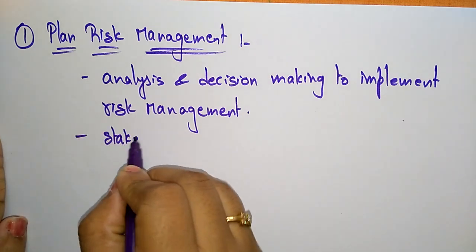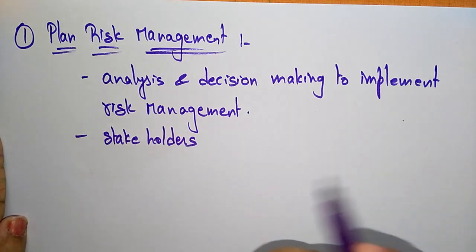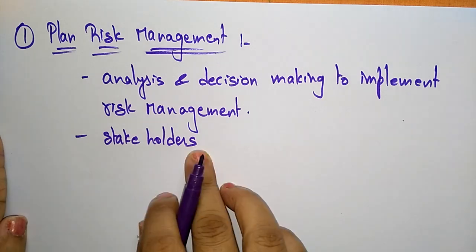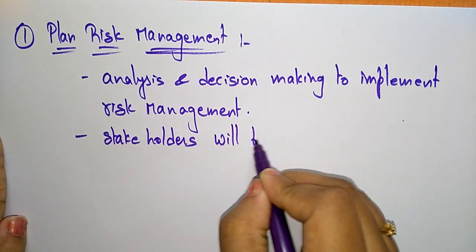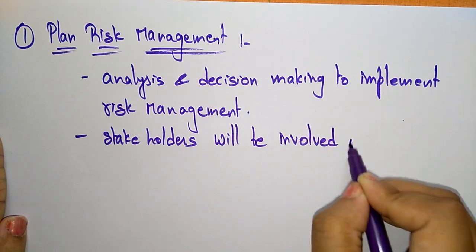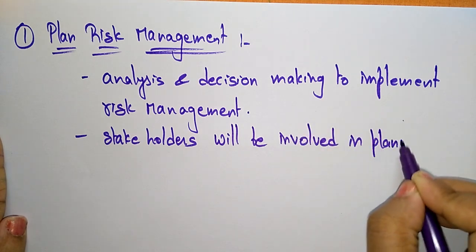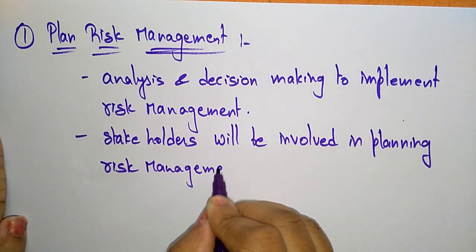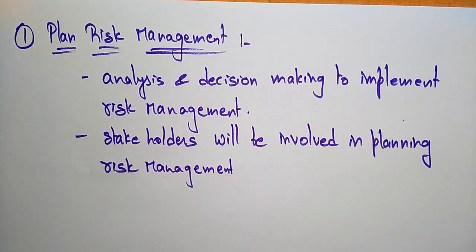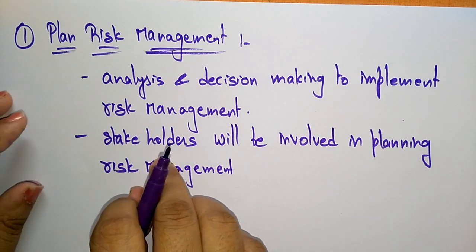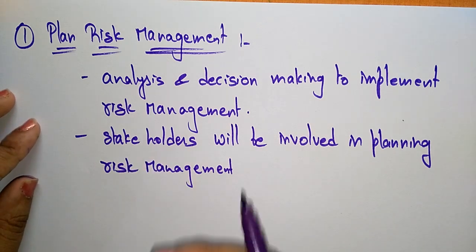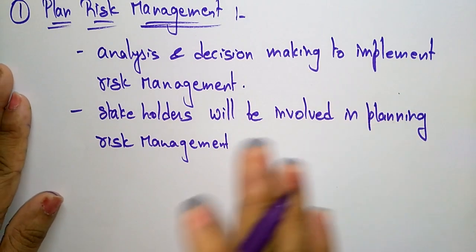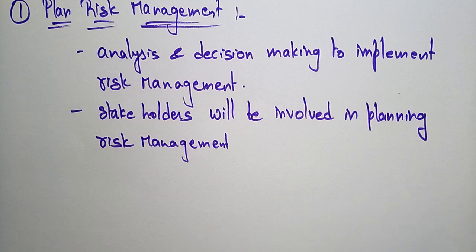Stakeholders will be involved in planning risk management. A stakeholder is the person who is going to be affected if you are implementing the project — maybe a manager, a customer, or anyone. They are involved because any risk, whether it has a positive or negative impact, will also be faced by the stakeholders.